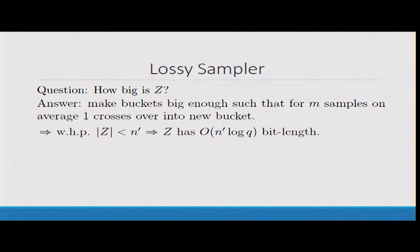Really the question now becomes, how big is this set Z? If we can bound the size of Z to be small enough, then it's easy to tell how much entropy is left in s. We just make the buckets big enough such that if you take M random samples in ZQ, on average maybe one will cross over into a new bucket. So a noticeable but constant size amount will end up in the overflow zone. With high probability, the set Z will have less than N prime elements.